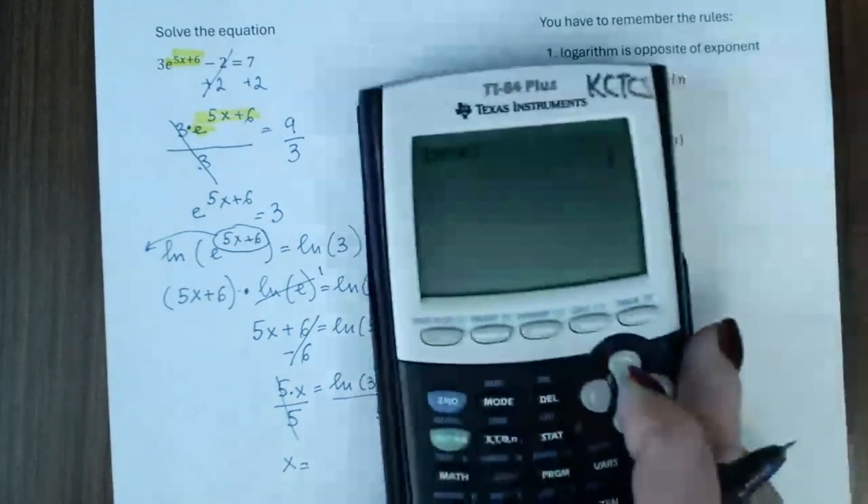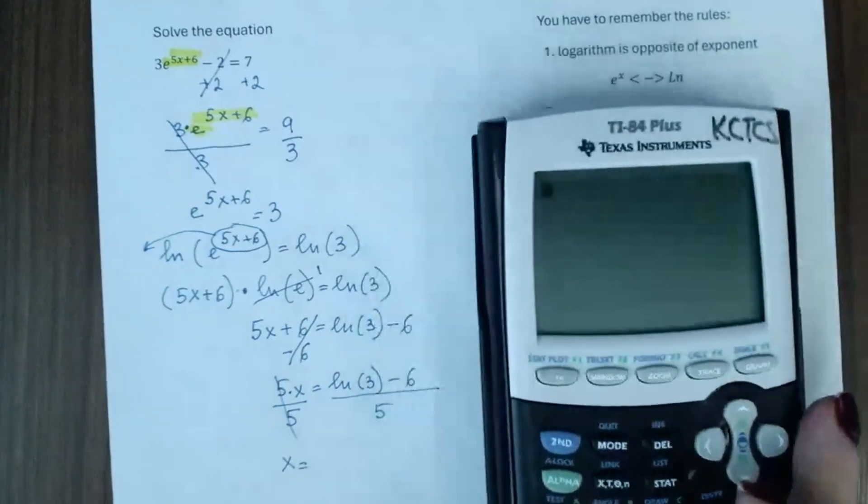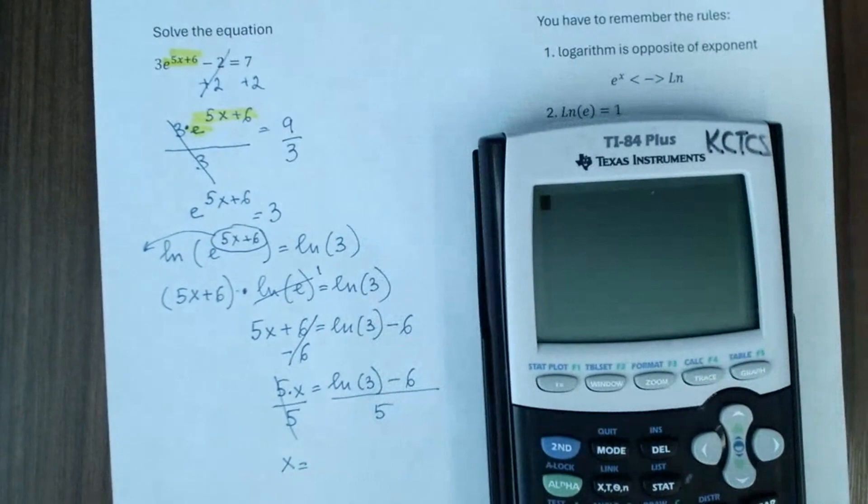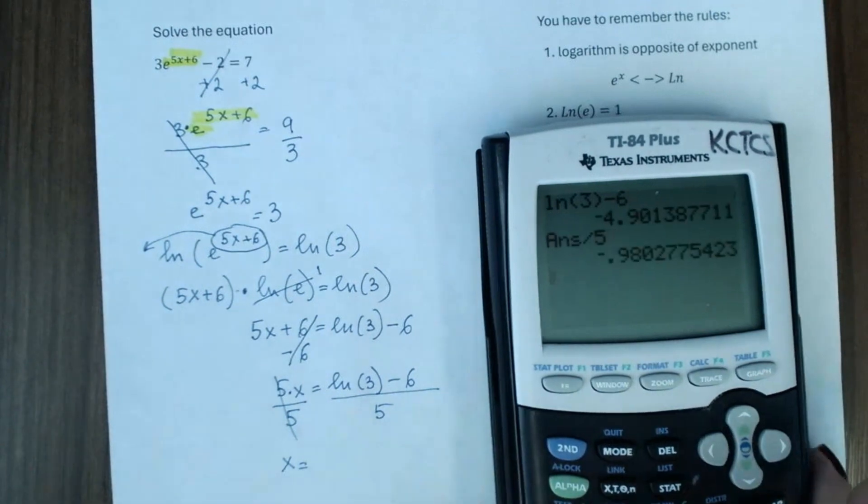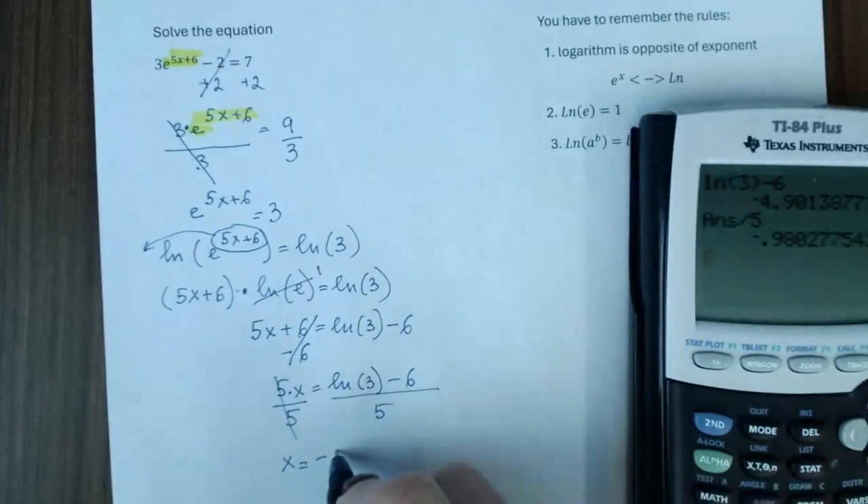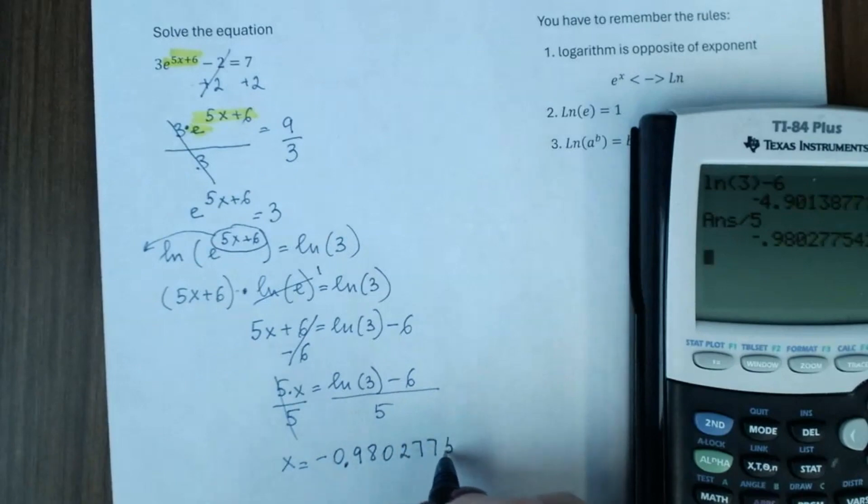And now it's time to calculate. And we will type on our calculator. Natural logarithm of 3 minus 6. Do one operation at a time. Enter. And divide by 5. Enter. And it will be negative 0.9802775.